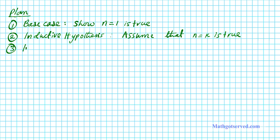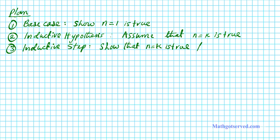The last part, which is normally the complicated part, is the inductive step. In the inductive step, you have to show that n equals k being true by assumption follows that the next step, n equals k plus 1, is also true. That domino effect basically continues for all natural numbers — if you have an arbitrary k and the next case holds as a result of k being true, then you can conclude by induction that the statement is true for all integers that satisfy the initial condition.